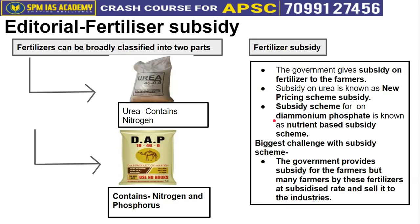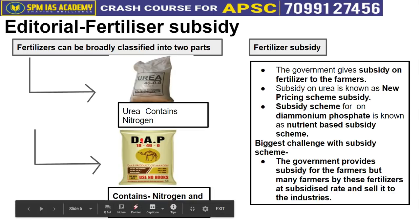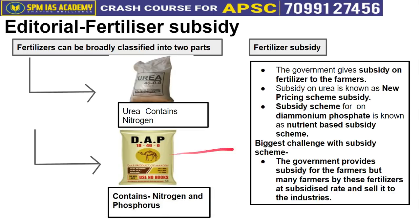The government provides subsidy on fertilizers for farmers. Urea-based fertilizer is covered under one subsidy scheme, while di-ammonium phosphate is covered under the nutrient-based subsidy scheme. Both types receive some form of government subsidy to make fertilizers affordable for farmers.